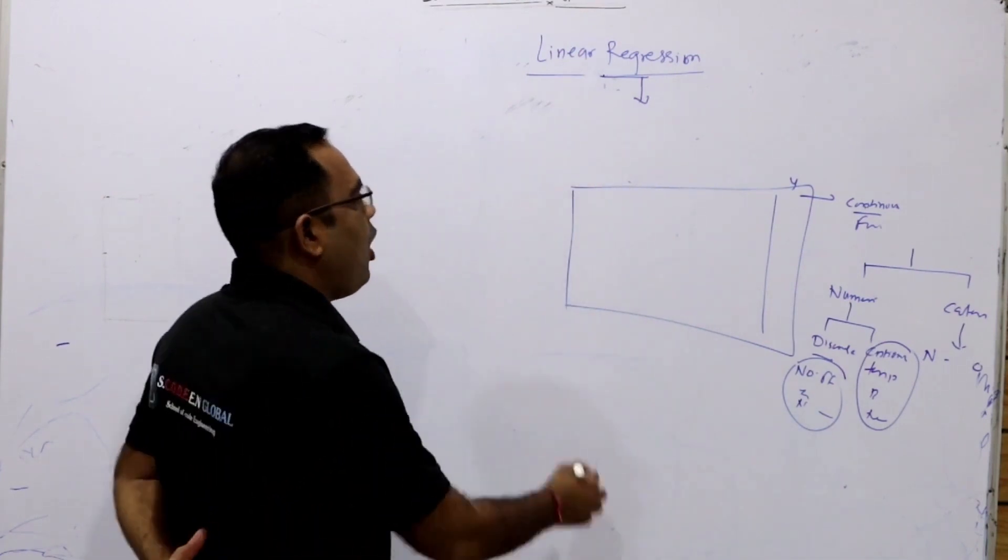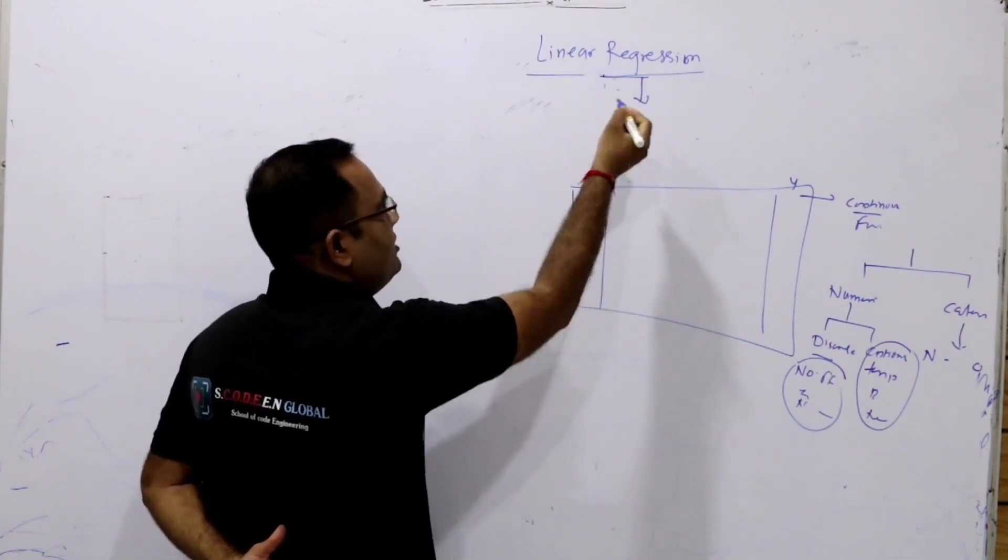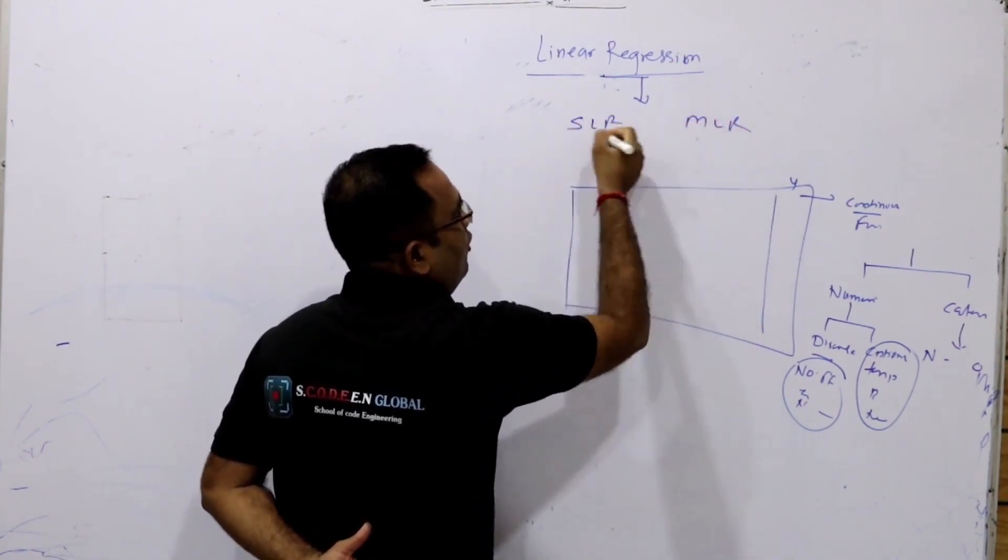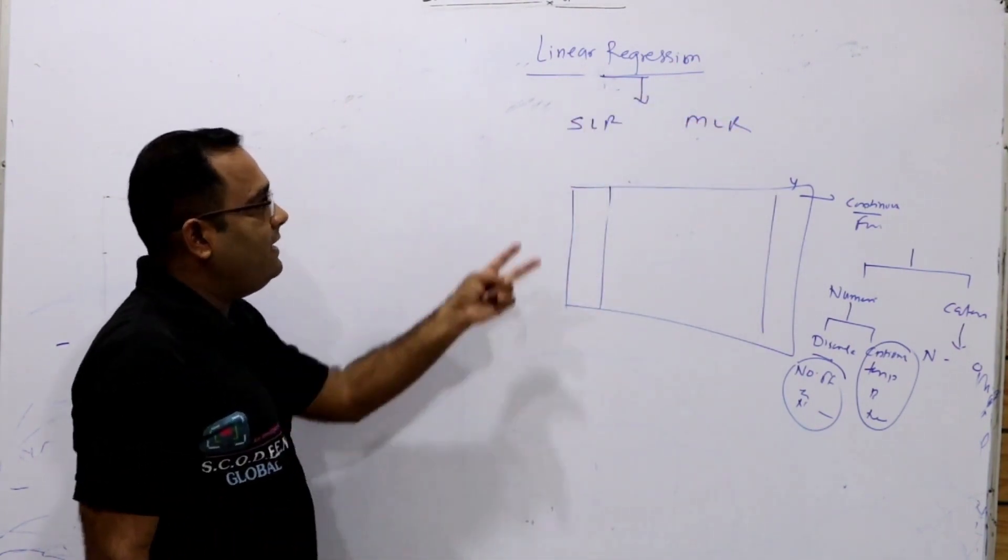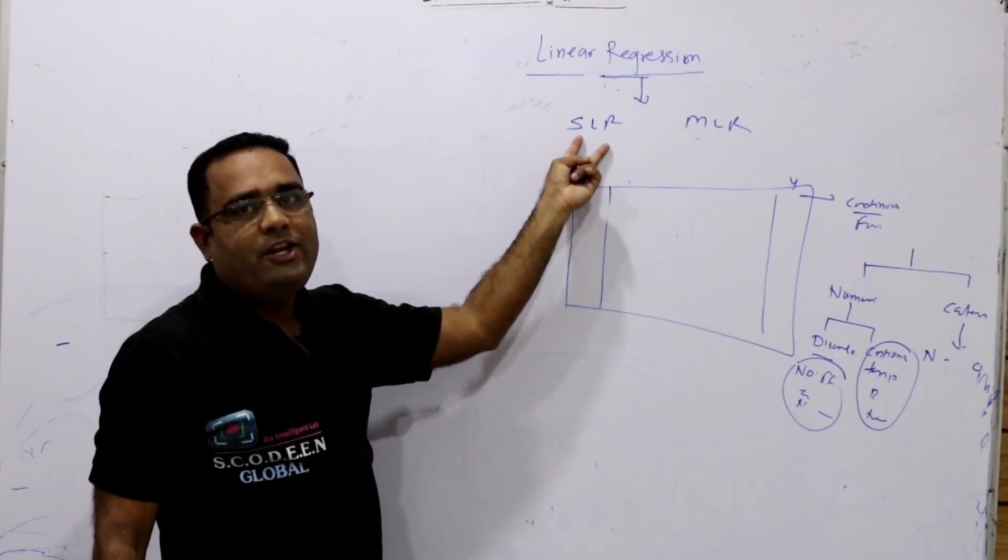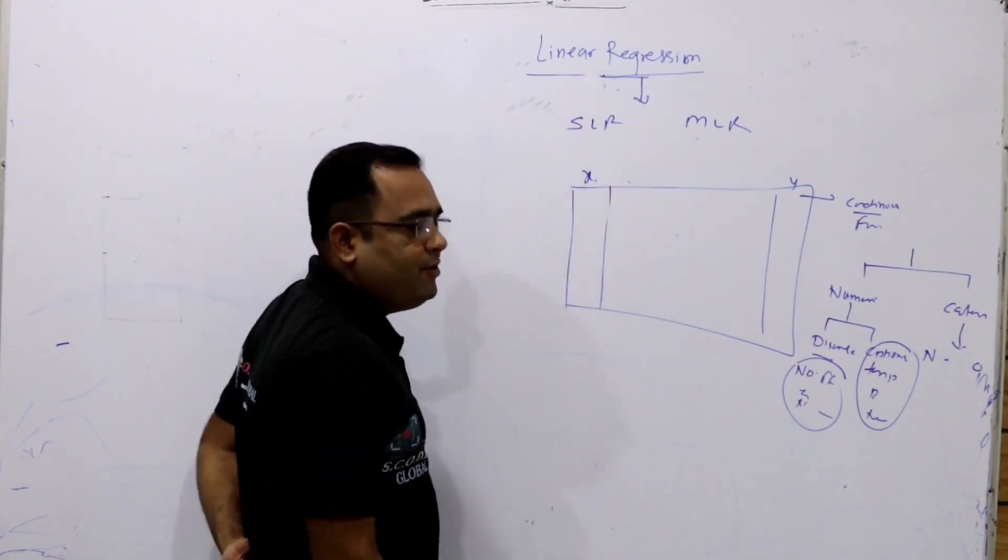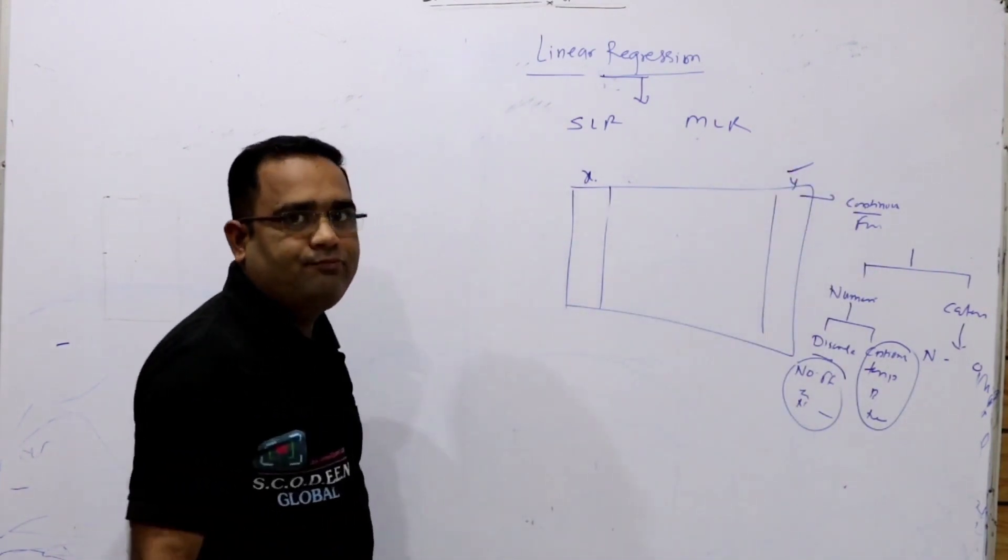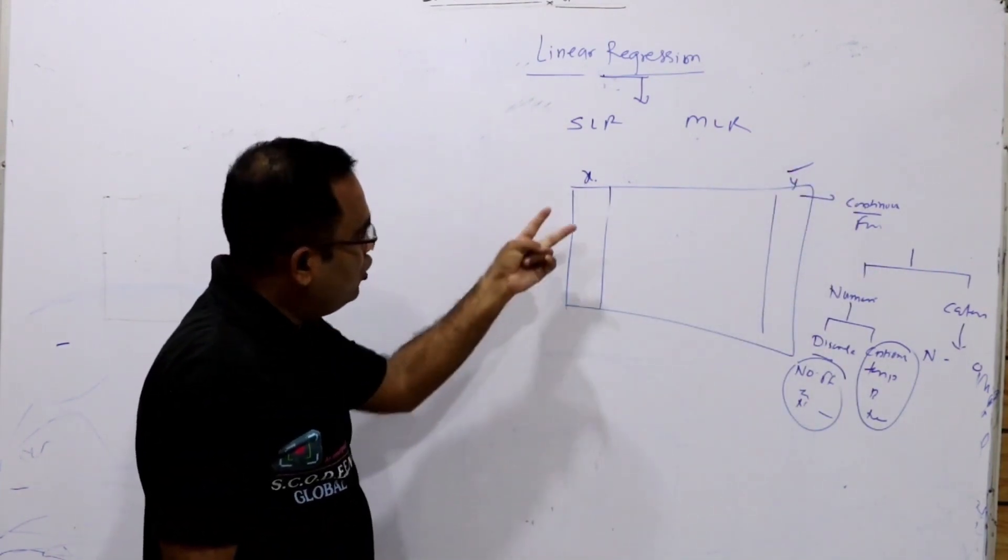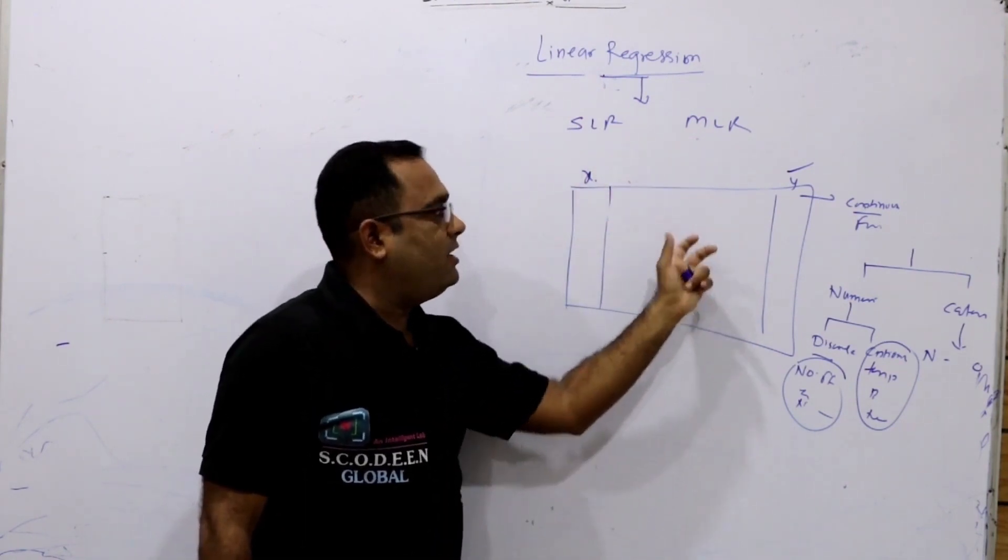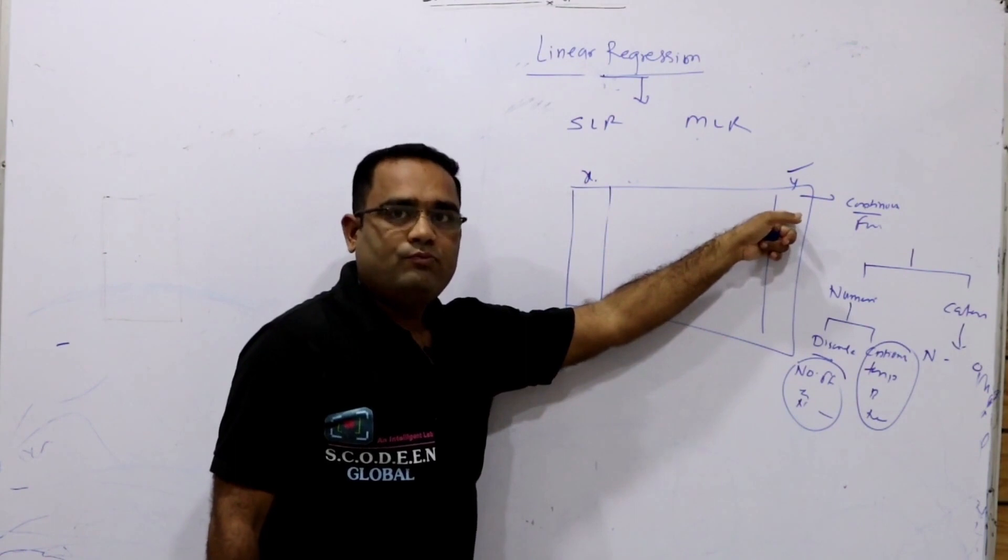Basically, when we plot the independent features, basically, this SLR and MLR, these are the two types of linear regression. So, in SLR, simple linear regression, we have only one independent feature and obviously one dependent feature. In MLR, there are multiple independent features and multiple features.